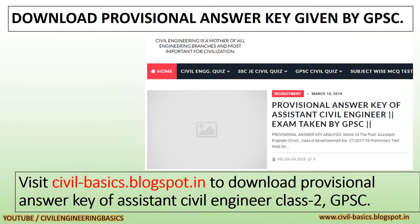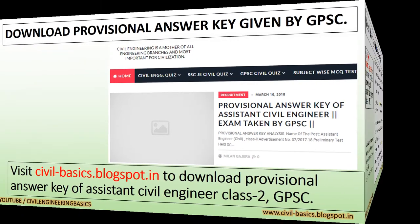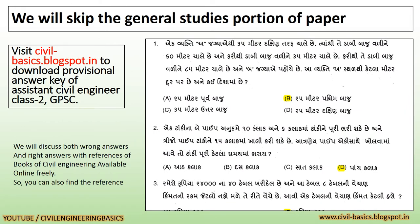You can download the provisional answer key by visiting my blog, which is www.civilbasics.blogspot.in. We will skip the general studies portion of the paper because our main aim is to analyze the questions of civil engineering only. We will discuss both wrong answers and right answers with references of civil engineering books available online freely. Visit civilbasics.blogspot.in to download the provisional answer key of Assistant Civil Engineer Class 2 GPSC.